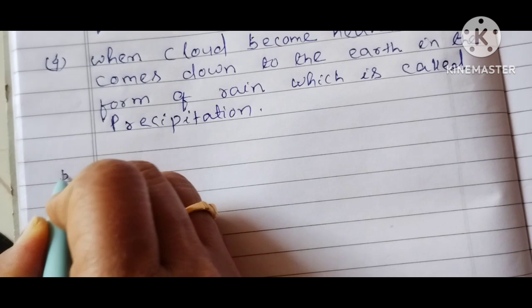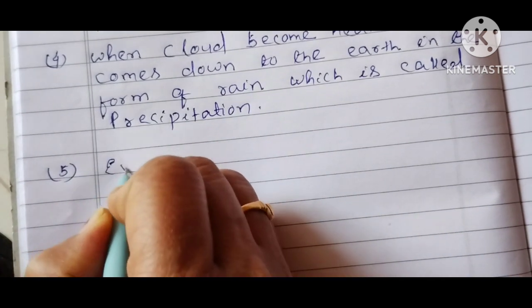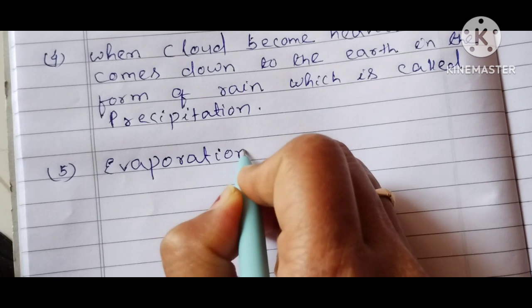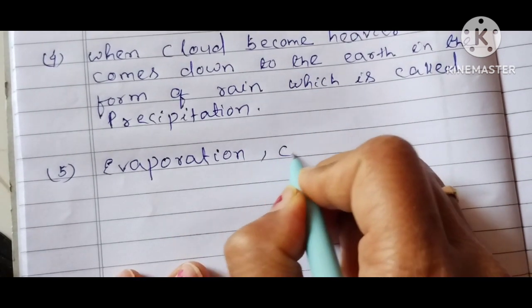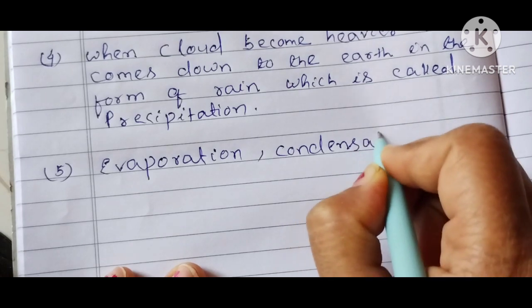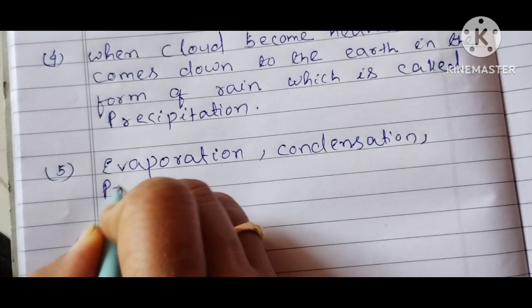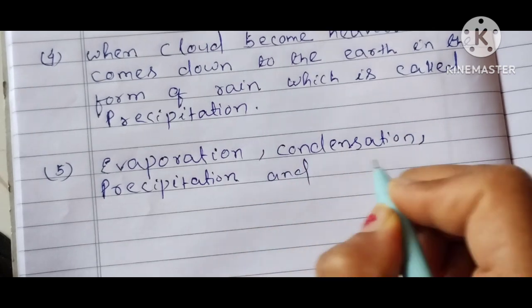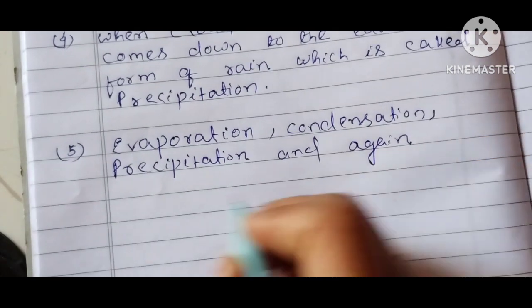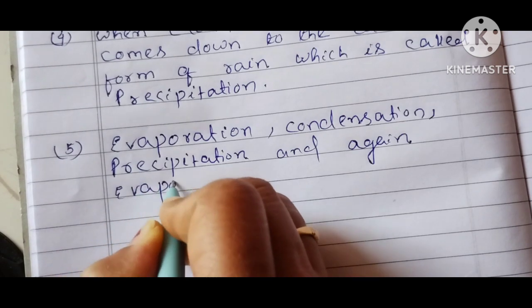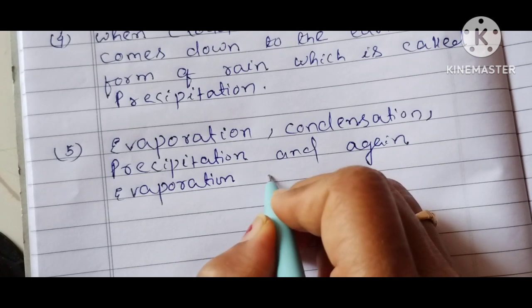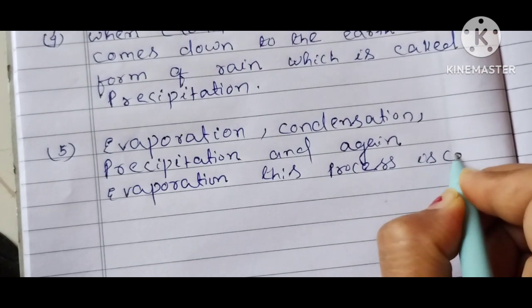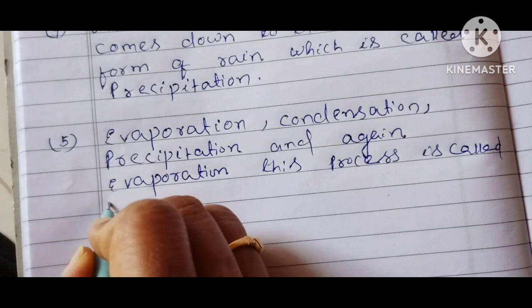Next point is evaporation, condensation, precipitation, and again evaporation. This is the water cycle.